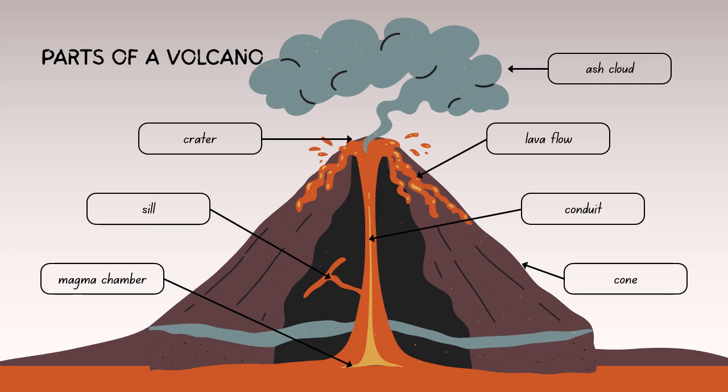A magma chamber is an underground reservoir that holds molten rock; pressure builds up in this chamber leading to volcanic activity. A vent is the opening through which volcanic material — including lava, ash, and gases — is expelled to the earth's surface.